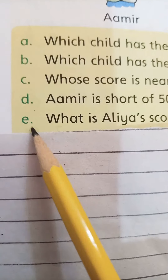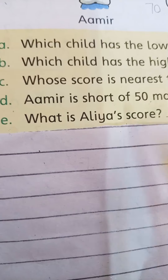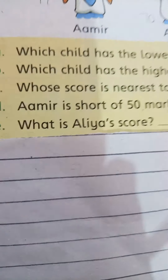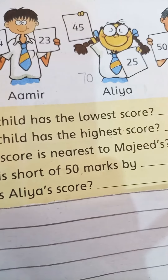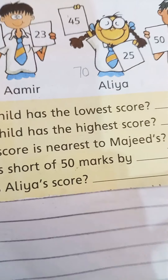Next is E — what is Alia's score? As we have calculated the total marks of each student, Alia's score is 70.